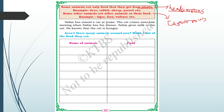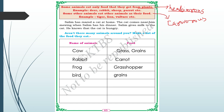Salim has reared a cat at home. The cat comes near him mewing when Salim has his dinner, and Salim gives milk to the cat knowing it is hungry. Aren't there many animals around you? Make a list of the food they eat — for example, cow eats grass or grains, rabbit eats carrot, frog eats grasshopper, bird eats grains, and lion eats deer.